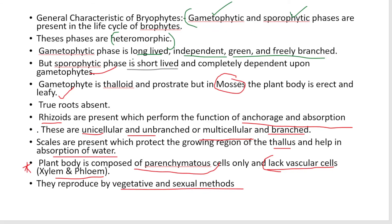Key characteristics of bryophytes: gametophytic and sporophytic phases are present and are heteromorphic. The gametophytic phase is long-lived, independent, green, and freely branched. The sporophytic phase is short-lived and completely dependent on the gametophyte. In liverworts, the gametophyte is thaloid; in mosses, the plant body is leafy. True roots are absent; rhizoids are present instead. The plant body is composed of parenchyma cells only and lacks vascular cells such as xylem and phloem. They reproduce by vegetative and sexual methods. In the next video, we will talk about the life cycle and economic importance of bryophytes.